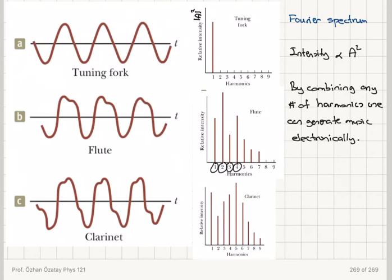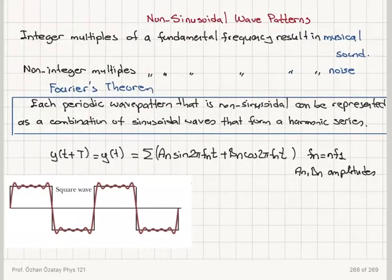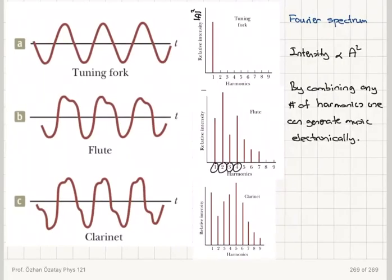Now the sound that we produce electronically will resemble that of the instrument, but it will never be the same. And that's because this series is an infinite series—it starts from n equals 1, goes to infinity. The Fourier series is an infinite series, so there will always be a small correction from the higher harmonic terms that were not considered in mixing of the harmonics.